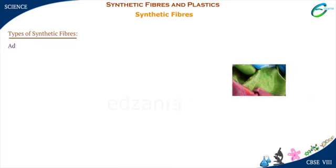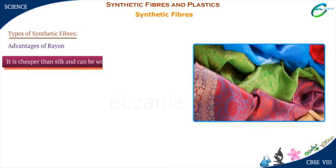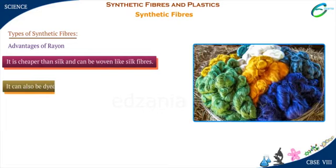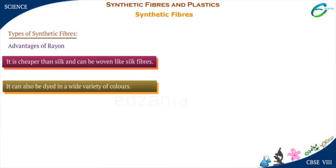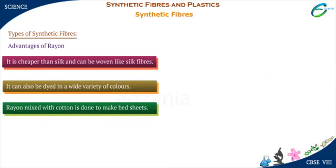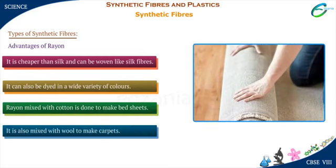Let us see the advantages of artificial silk. It is cheaper than silk and can be woven like silk fibers. It can also be dyed in a wide variety of colors. Rayon mixed with cotton is used to make bed sheets, and it is also mixed with wool to make carpets.